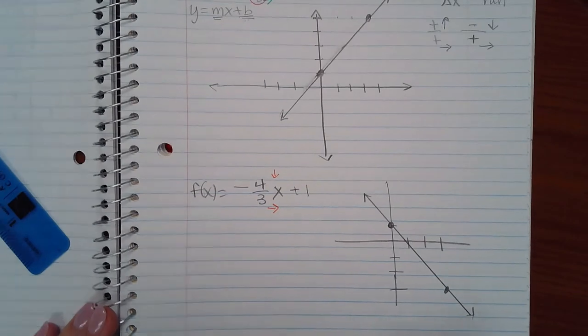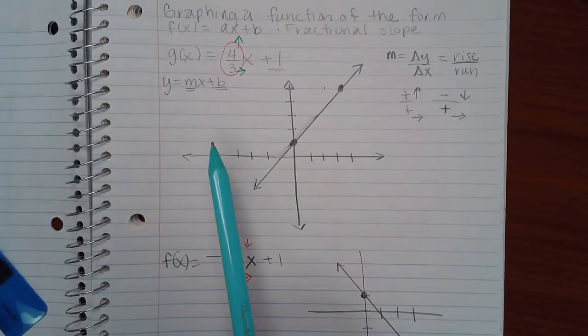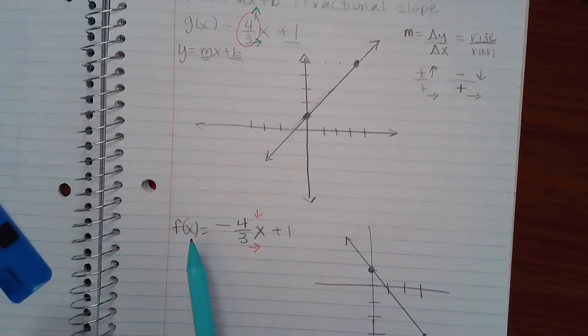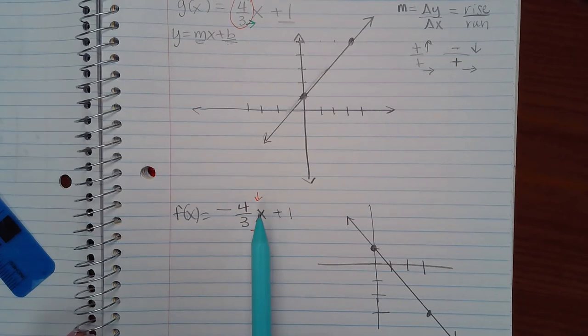Okay? So just remember, if it's positive, you're going to go up and to the right. If it's a negative number, you're going to go down and to the right.